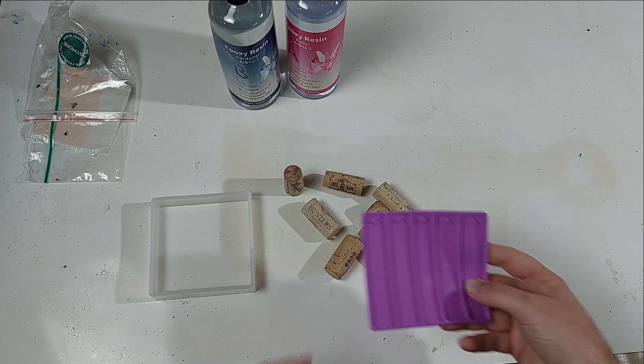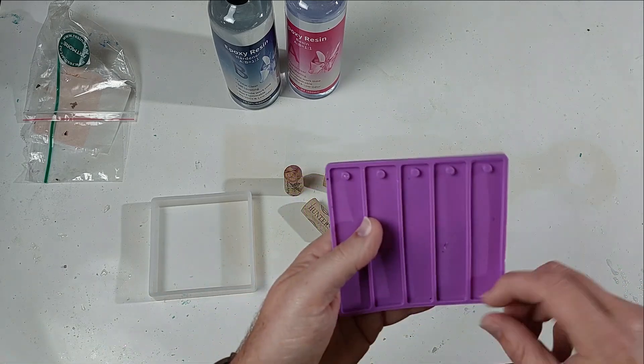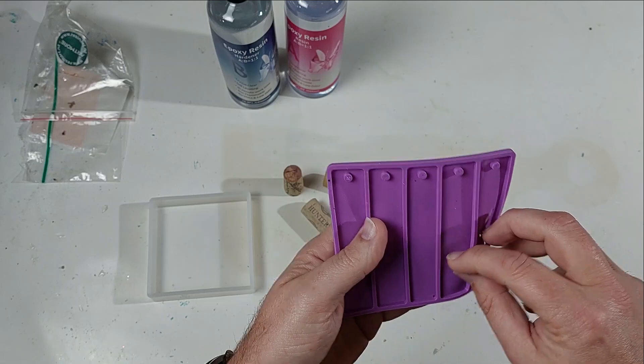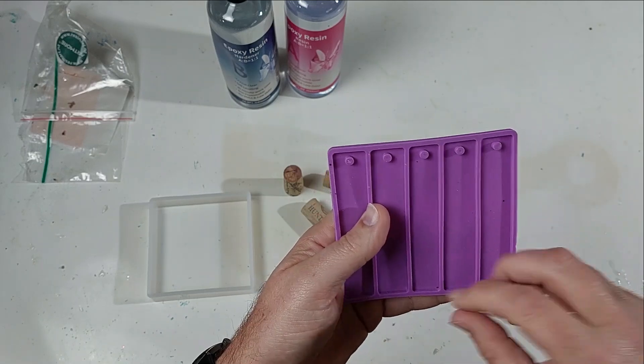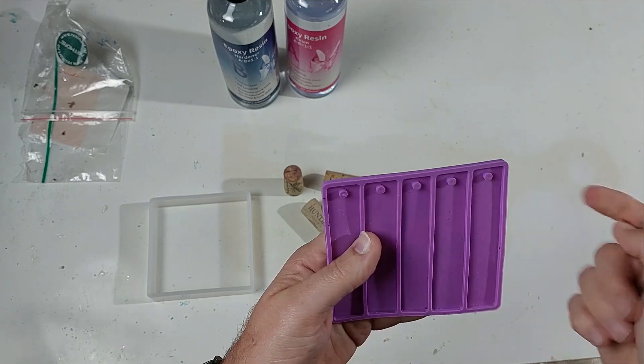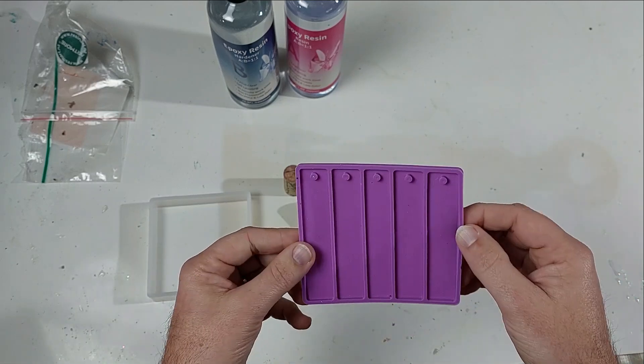And then we've got some bookmarks mold. Now with this, this is very thin. So this will demonstrate to us how this resin works in thin layers. So that's good for putting on your art, for example.